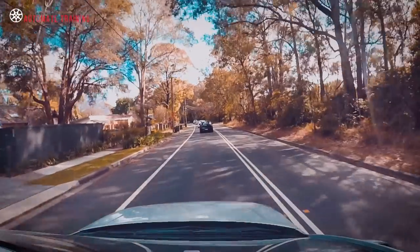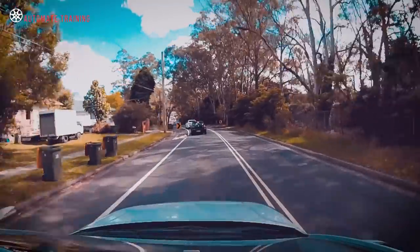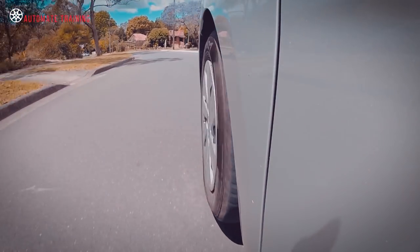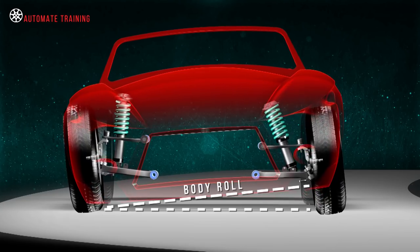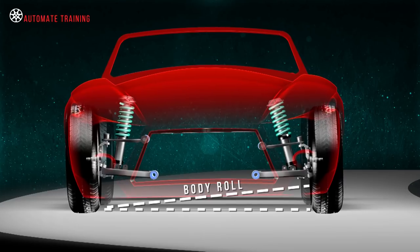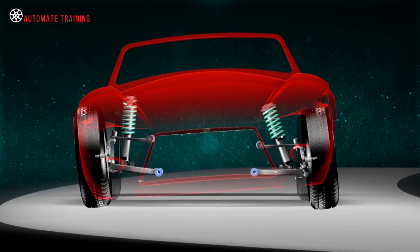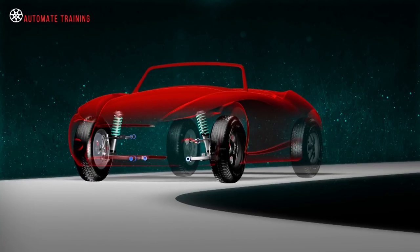When this scenario occurs it's referred to as body roll. Body roll to some extent is required by the vehicle to exert force on the vehicle's outside wheels during a turn, but too much or too little body roll results in unwanted conditions known as understeer or oversteer. During body roll, the vehicle's body is no longer parallel with the road, and so neither is the suspension geometry.